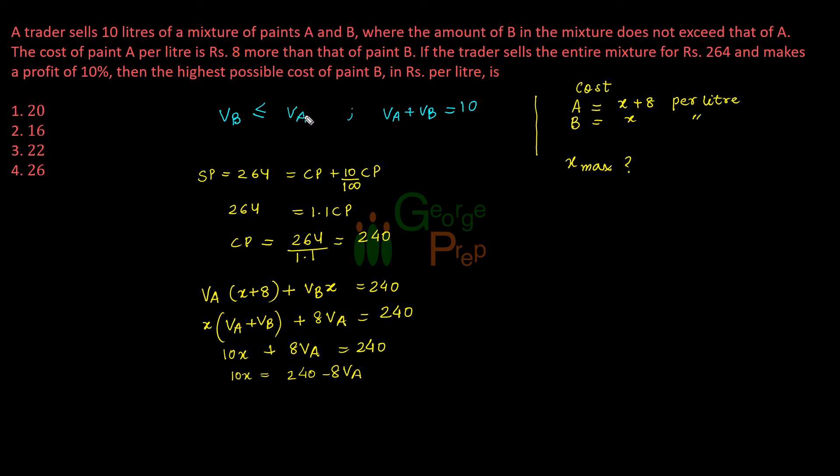VB could not be greater than VA. We cannot take VB as 6 and VA as 4 because that will violate this inequality. So at the max I can take both as equal. The minimum value of VA will be 5, so I am minimizing this VA to satisfy the inequality.